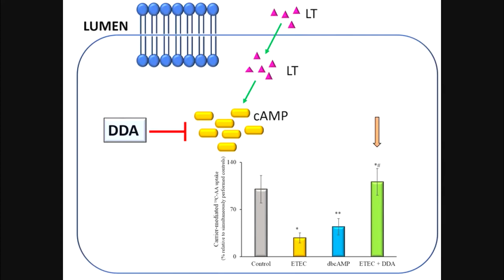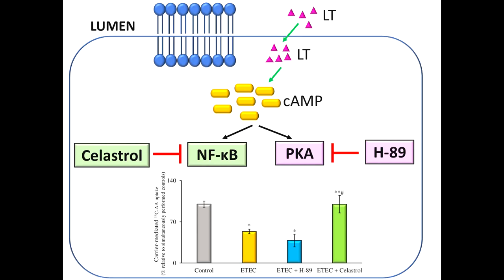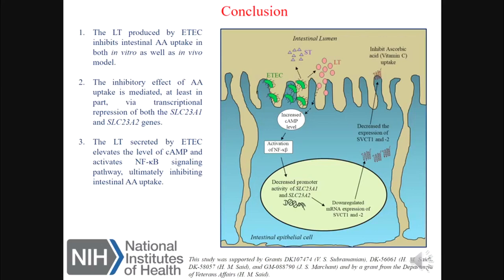Heat-labile enterotoxin has been reported to activate adenylate cyclase and increase cyclic AMP. To check if increased cyclic AMP is responsible for the observed ascorbic acid uptake inhibition, Caco-2 cells were treated with dideoxy adenosine, a cyclic AMP inhibitor, and assessed for vitamin C uptake. No change in ascorbic acid uptake was observed upon treatment with dideoxy adenosine, further confirming the involvement of cyclic AMP. Downstream pathway of cyclic AMP follows either an NF-κB mediated pathway or a protein kinase A pathway. To identify which pathway is involved, we individually inhibited NF-κB using Celastrol and protein kinase A using H89. NF-κB pathway inhibition did not affect ascorbic acid uptake, further validating its involvement in the ascorbic acid uptake inhibition.